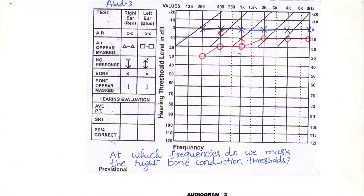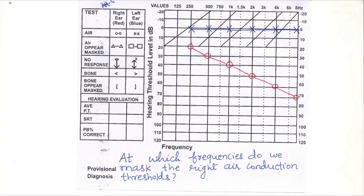In audiogram number 1, the query is: at which frequencies do we mask the right bone conduction thresholds? This is audiogram number 2, and the query is: at which frequencies do we mask the right air conduction thresholds?